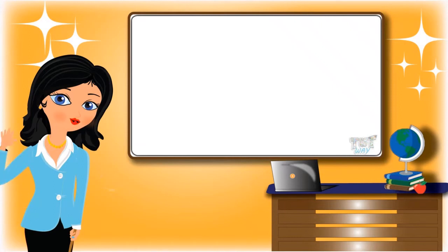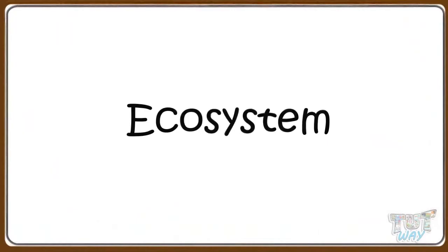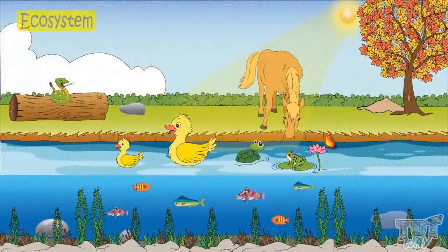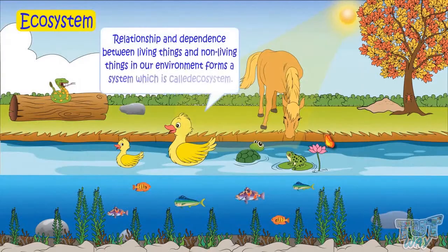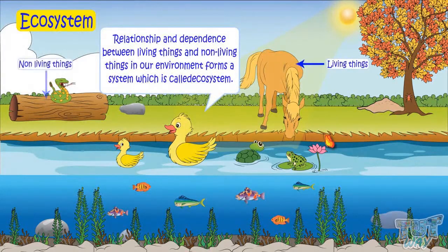Hi kids! Today we will learn what is ecosystem. So let's start. The relationship and dependence between living things and non-living things in our environment forms a system, which is called ecosystem.